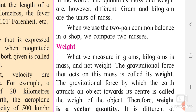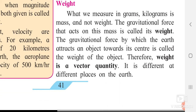The gravitational force by which the earth attracts an object towards its center is called the weight of an object. For example, if your weight is 40 kg, it is because gravitational force is acting on you and pulling you down. Therefore, weight is a vector quantity — it is different at different places on the earth, as gravitational force is not the same everywhere.